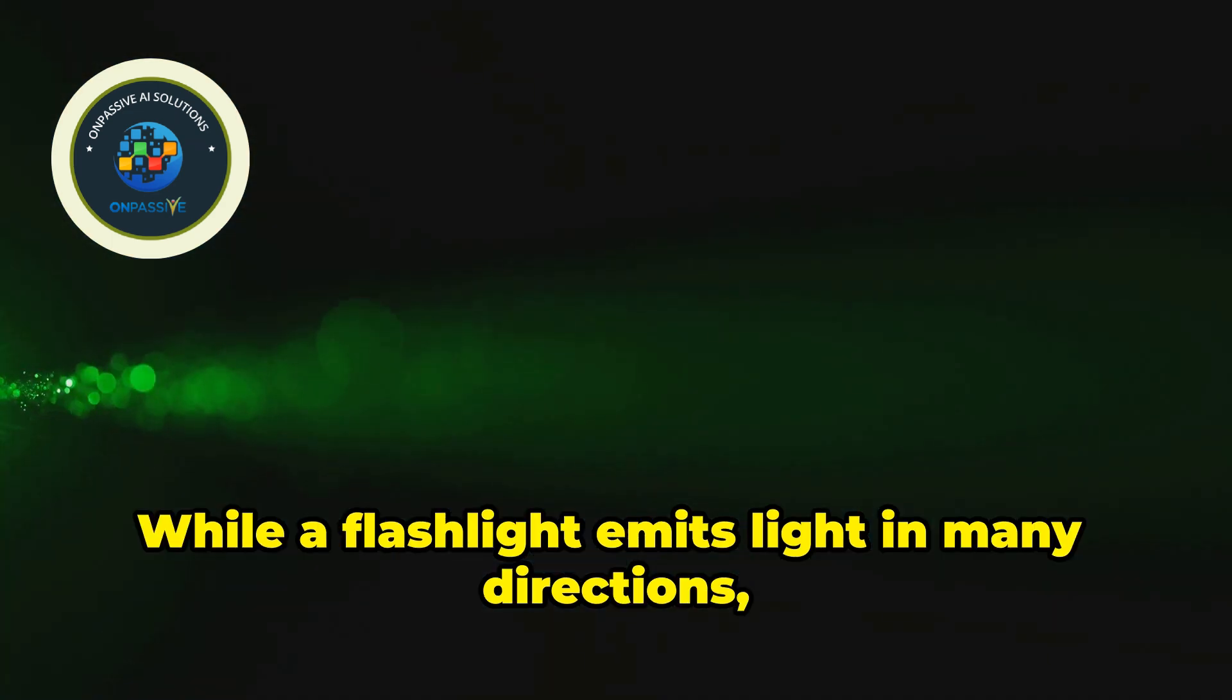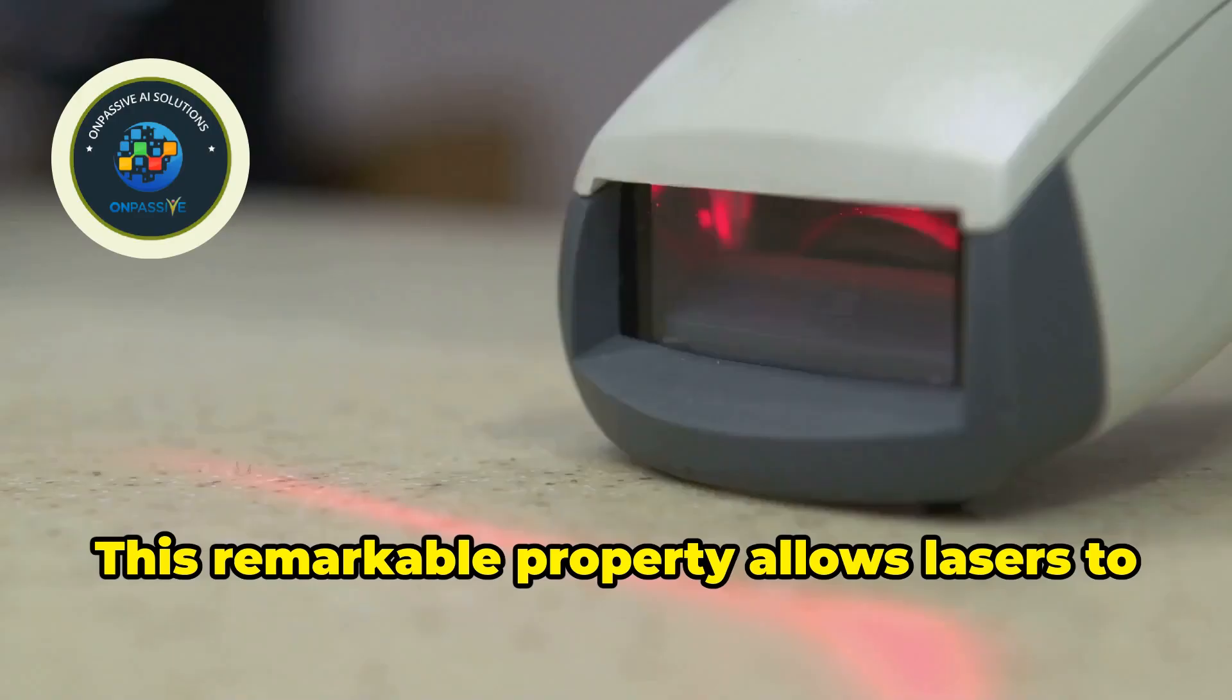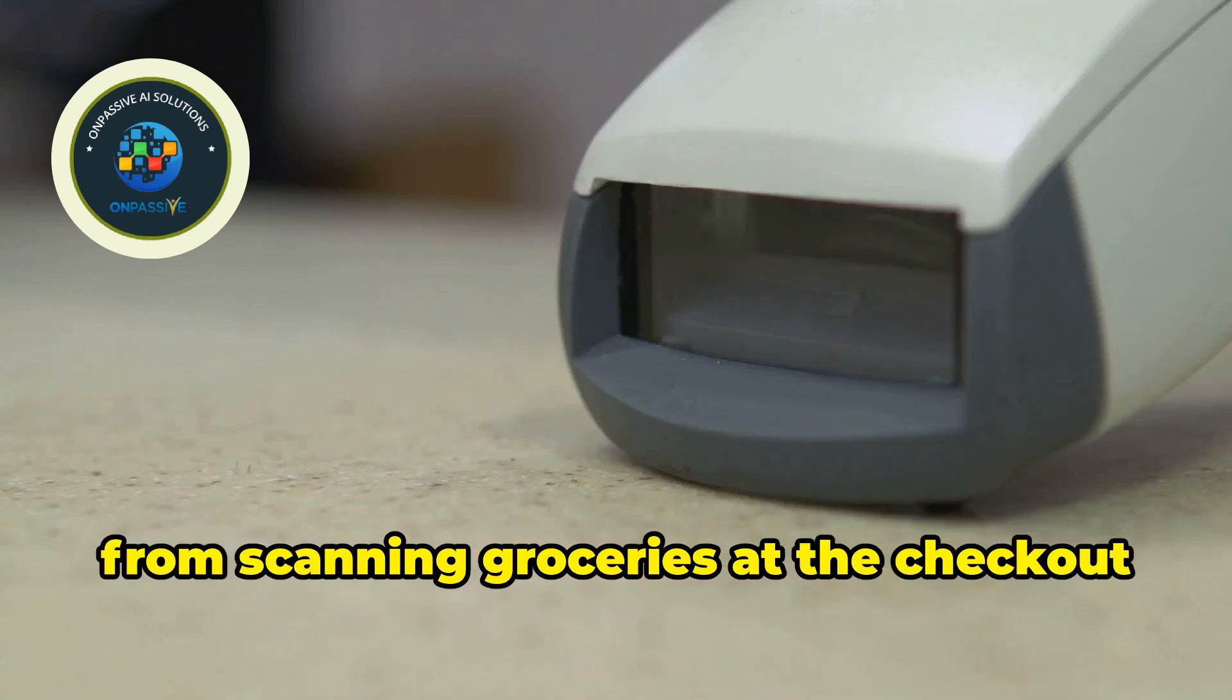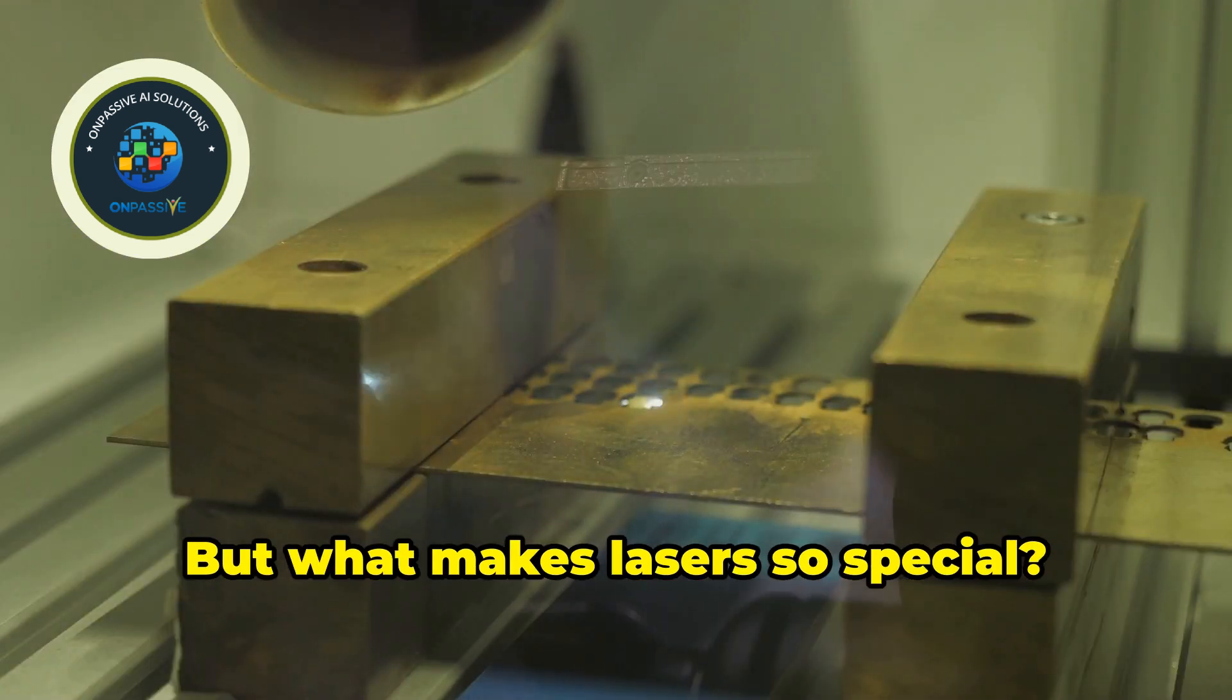While a flashlight emits light in many directions, creating a broad beam, a laser concentrates its light into a narrow, intense beam. This remarkable property allows lasers to do incredible things from scanning groceries at the checkout to performing delicate surgeries. But what makes lasers so special?